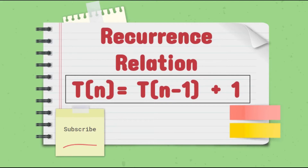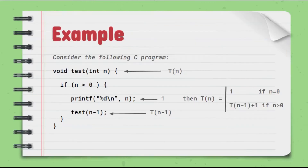The topic is a recurrence relation of type C(n) = C(n-1) + 1. In the previous tutorial we defined what a recurrence relation means, and in this tutorial we are going to see how to solve this type of recurrence relation: C(n) = C(n-1) + 1.